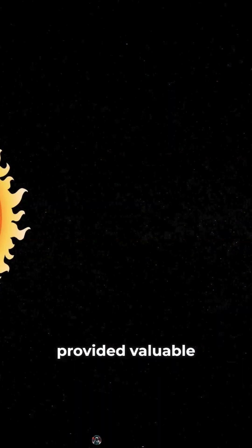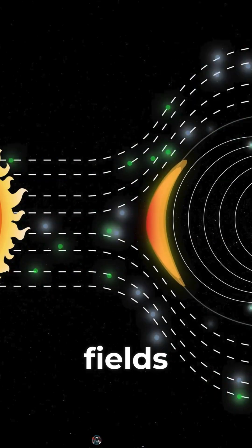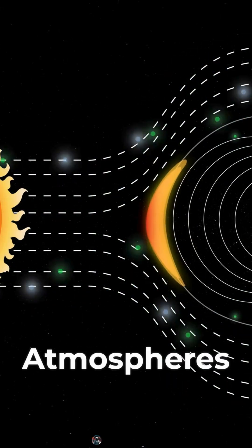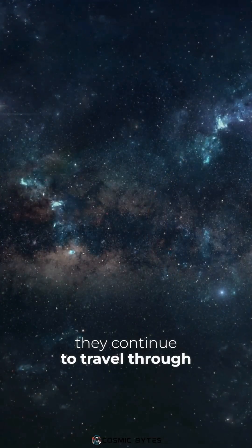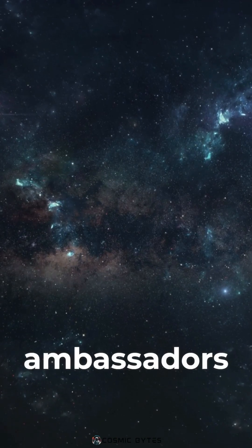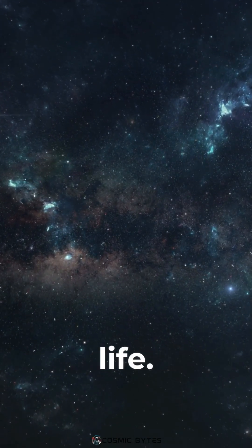The Pioneer probes provided valuable data about the solar wind, magnetic fields, and the outer planet's atmospheres. They continue to travel through space, serving as ambassadors of humanity to any potential extraterrestrial life.